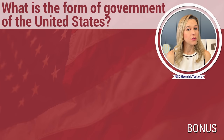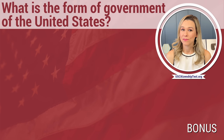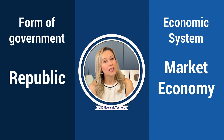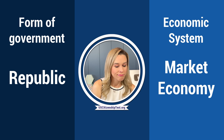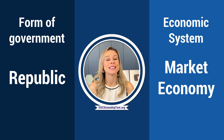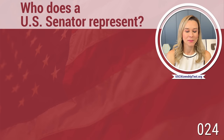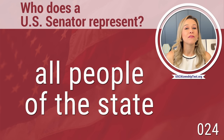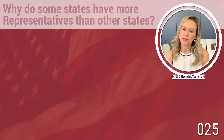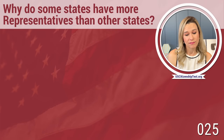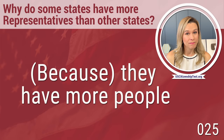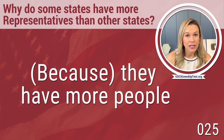The next question is a bonus question they sometimes ask at the interview, so be prepared. What is the form of government of the United States? Republic. Don't get that confused with our economic system — market economy is our economic system, and republic is our form of government. Who does a U.S. senator represent? All people of the state. Why do some states have more representatives than other states? Because they have more people. California has a ton of U.S. representatives, versus Alaska, which only has one.